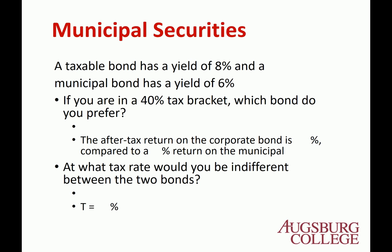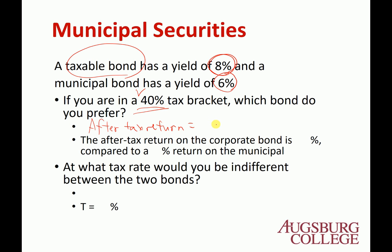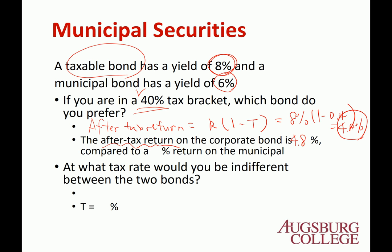If a taxable bond has a yield of 8% and a municipal bond has a yield of 6%, and you are in the 40% tax bracket, which bond do you prefer? The after-tax return for the taxable bond will be your yield times 1 minus the tax rate: 8% times (1 − 40%) = 4.8%. So you actually only keep 4.8%, while the municipal bond gives you 6% because you don't have to pay any tax. So you prefer the munis.